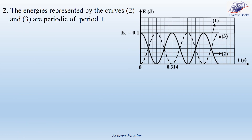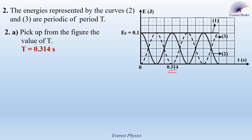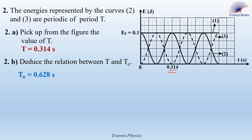Part 2: the energies represented by curves 2 and 3 are periodic of period T. Part 2a: pick up from the figure the value of T. Each of the curves 2 and 3 repeats itself identically during a time of 0.314 seconds. Therefore, the period of the energy equals 0.314 seconds. Part 2b: deduce the relation between T and T0. The natural period of oscillation is 0.628 seconds, while the period of the energy is 0.314 seconds. Therefore, the natural period T0 equals 2 times the period of the energy T.